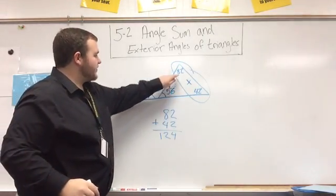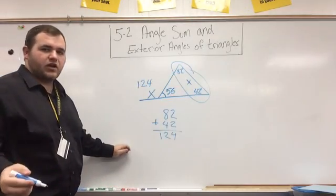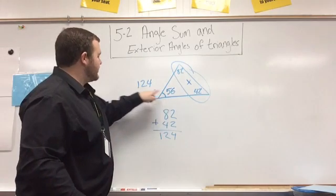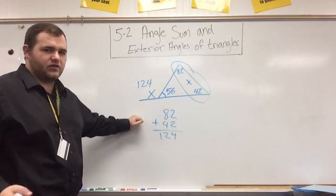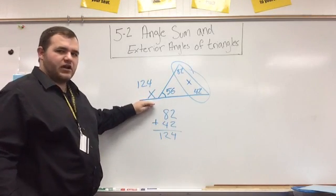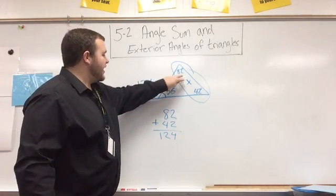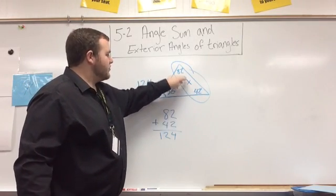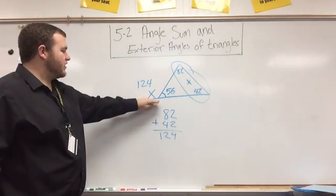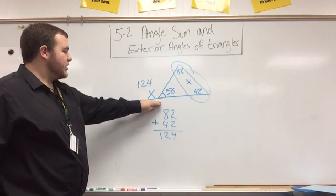And so if we added 56, 82, and 42, we get 180 degrees. If we add 56 and 124, we get 180 degrees. So if they want us to find that exterior angle, we can just add the opposite two angles that aren't connected with the exterior angle.